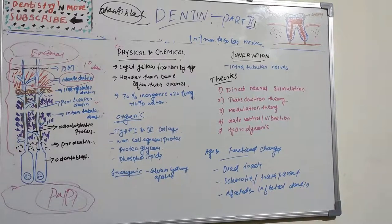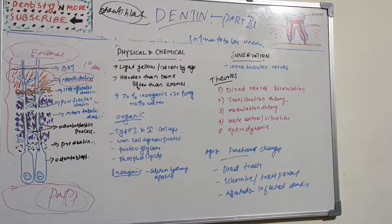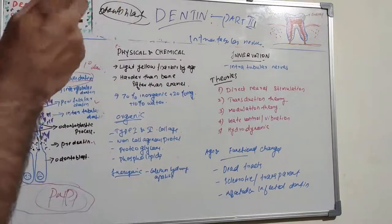Moving to age and functional changes: due to physiological and pathological stimuli, there are always changes in the vitality of dentine. Secondary dentine is continuously deposited in the pulpal layer as dentine is removed by processes such as dental caries, abrasion, and attrition. These processes also lead to formation of structures like dead tracks and sclerotic dentine, in addition to reparative dentine.